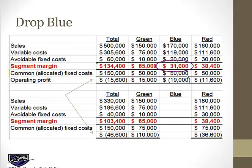So if you get rid of blue, you lose that $31,000 segment margin. Profits got worse — worse by the $31,000 — because the $150,000 common cost stayed and was split between green and red. If a segment margin is positive, that segment is contributing toward the shared fixed costs, even if it's not covering the full amount assigned to it. So if you eliminate it, you lose that contribution.